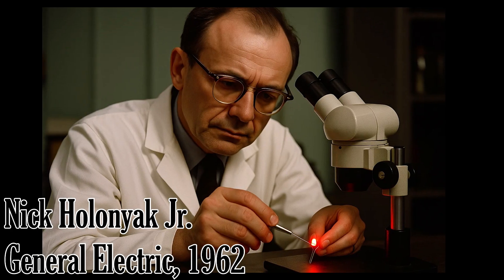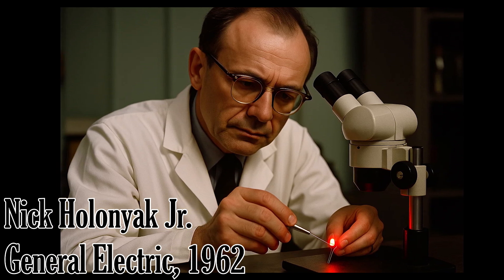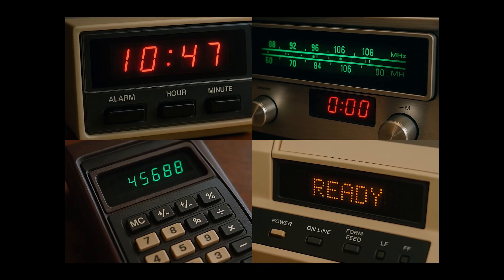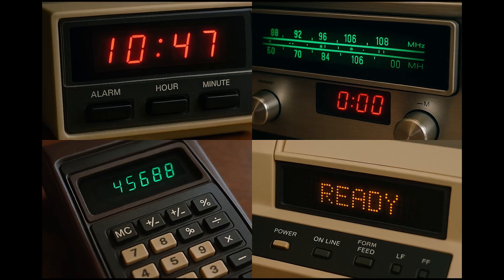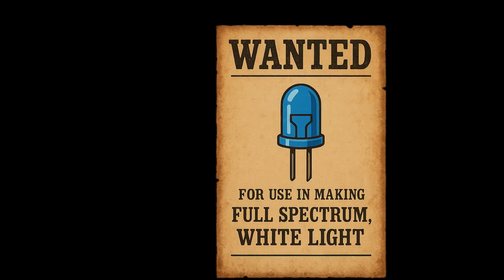Nick Holonyak at General Electric invented the first practical, visible spectrum red LED in 1962. For decades thereafter, we had red, green, and amber LEDs. These were way more efficient and durable than light sources like neon and vacuum fluorescent displays. The problem was we couldn't make blue.